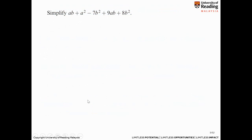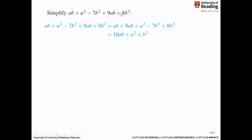Let's go to a more complicated expression — please pause the video for a short while and try to do these questions. What we need to do is arrange all the like terms together. ab and 9ab are the same, so bring 9ab to second position. Then minus b squared and 8b squared are like terms, while a squared stands alone. Rearranging: ab plus 9ab gives 10ab; a squared just copy; minus 7b squared plus 8b squared gives b squared. So the answer is 10ab plus a squared plus b squared.